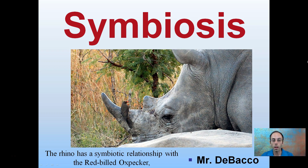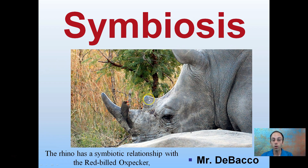Here we're looking at symbiosis, and this is a prime example of the title image right here. We have the rhino with a symbiotic relationship with the red-billed ox-pecker. So the symbiotic relationship between these two different species. Let's go into a little bit more of what this actually means.